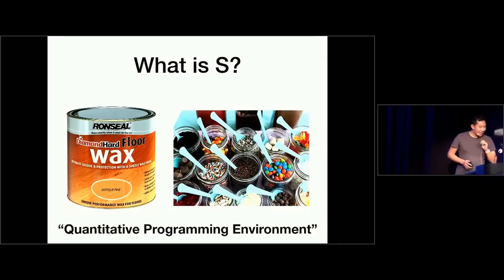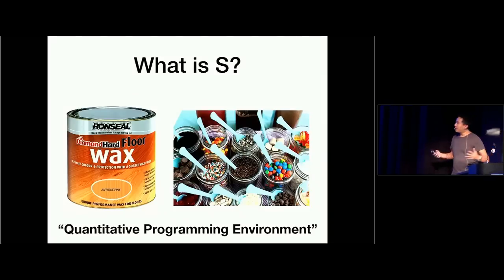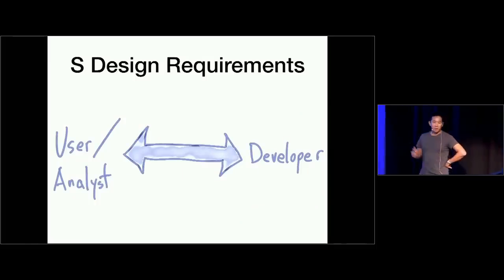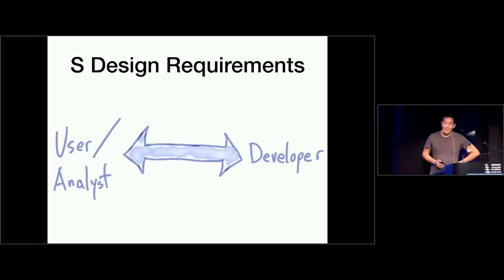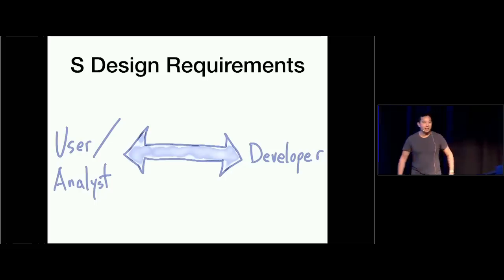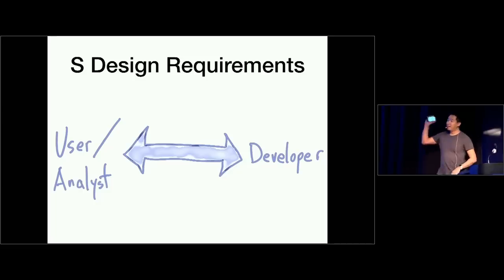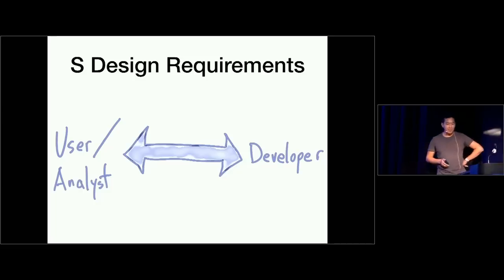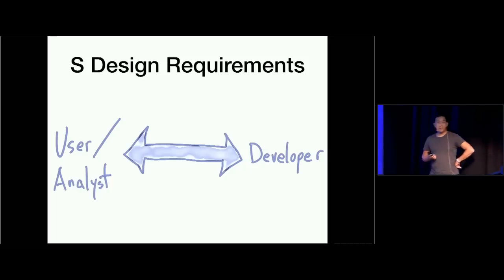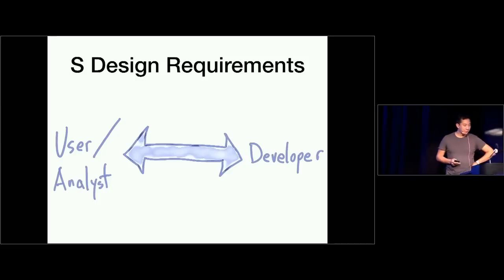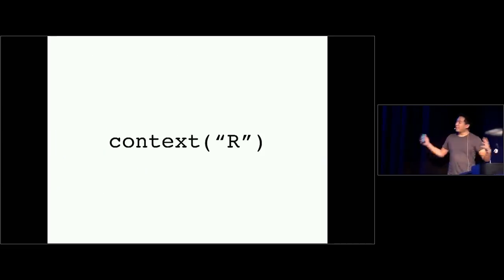What I draw from Chambers' work is what I call the user-developer spectrum, or the analyst-developer spectrum. That was kind of the design requirement for the S language — it's got to be usable by the whole range. I think it's a fascinating and novel design requirement for a programming language. That's the little prehistory. Now I want to talk about the context in which R came to be.